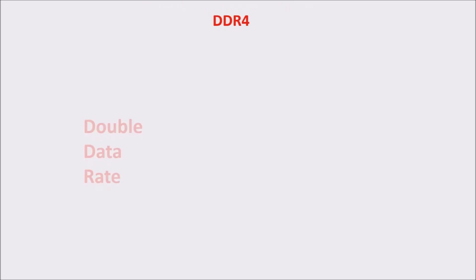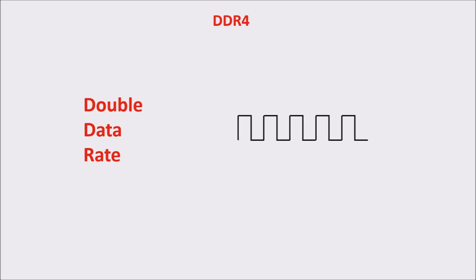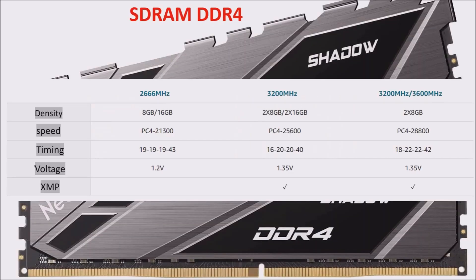DDR stands for Double Data Rate. It means that the memory can fetch the data not only on the rising front of the clock but even on the falling front. So we can double the data transferred. Now that we've understood the name, we can start with the other characteristics.